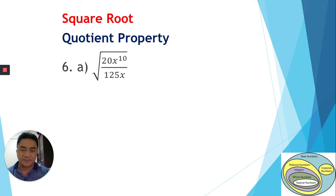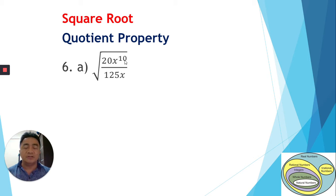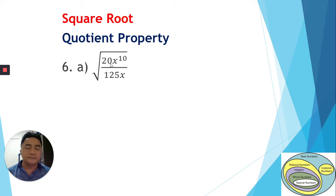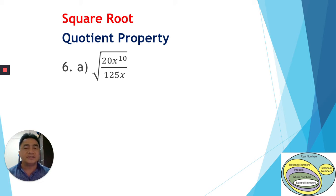We start with the same method we used with the product rule — we're going to expand. For example, the variable with power 10, we expand it to have the variable with power 2 so that it can be extracted. For the coefficient 20, we're going to find any factor of 20 which is a perfect square, so that it can be written as a power 2 and extracted out.